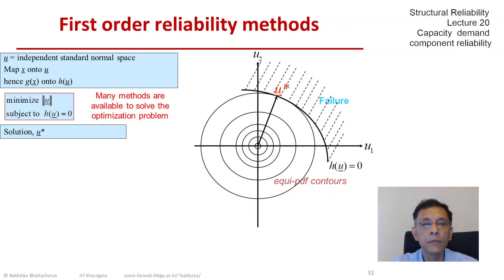It is by definition closest to the origin, so it has the minimum distance from the origin. This minimum distance is called the reliability index and it is closely related to the failure probability or reliability that we are going to see next.